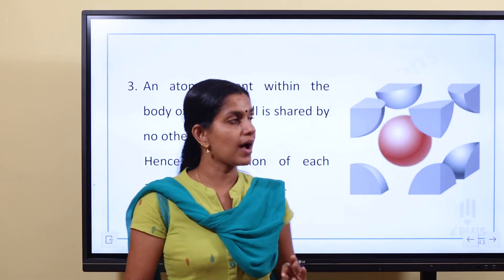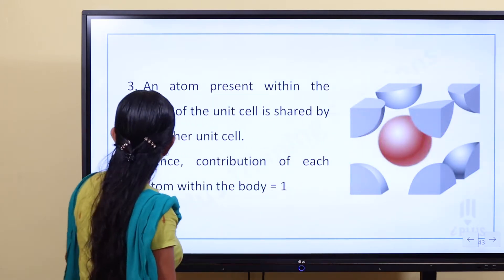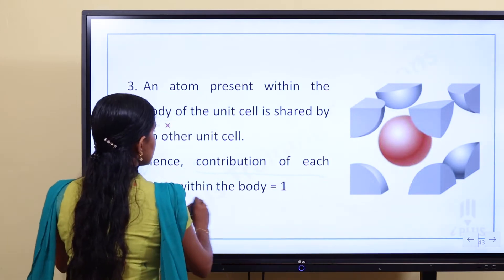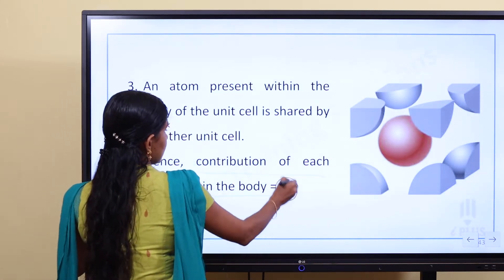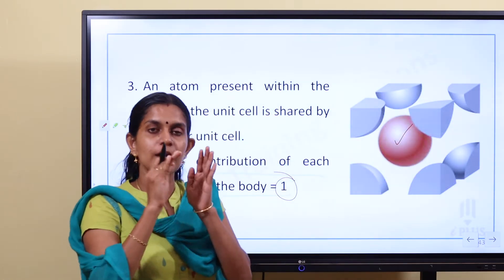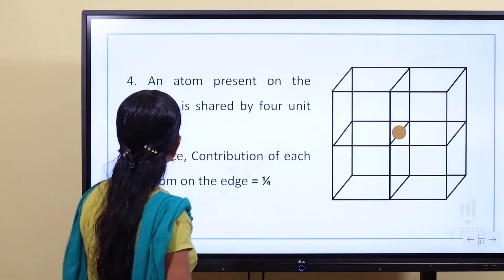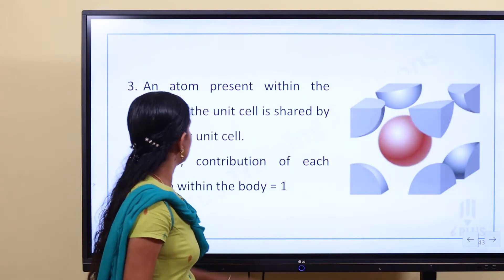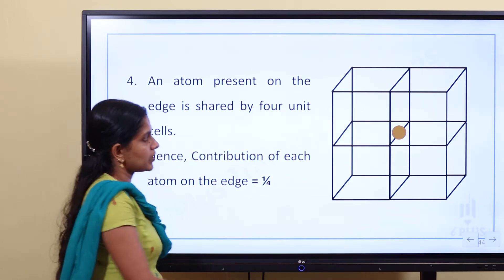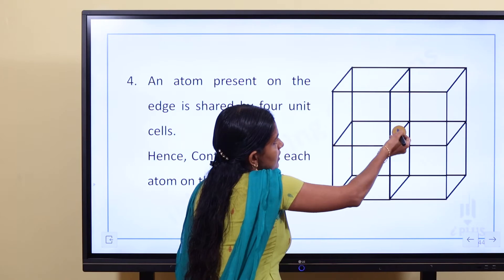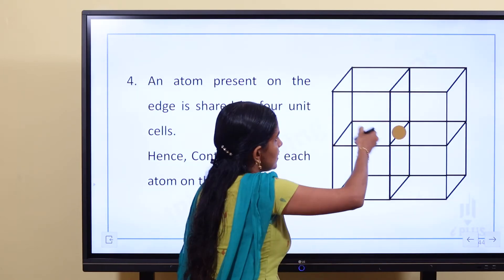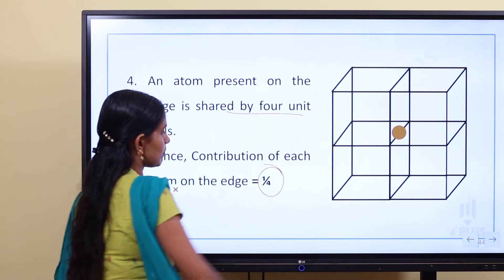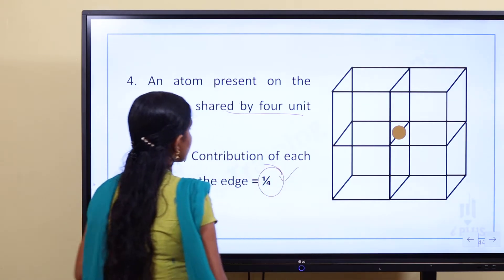The body center atom belongs entirely to one cube — it is not shared. So the contribution of each body-centered atom is 1. The fourth category is the edge. An edge atom can be shared with 4 different unit cells, so the contribution of an edge atom is 1/4.